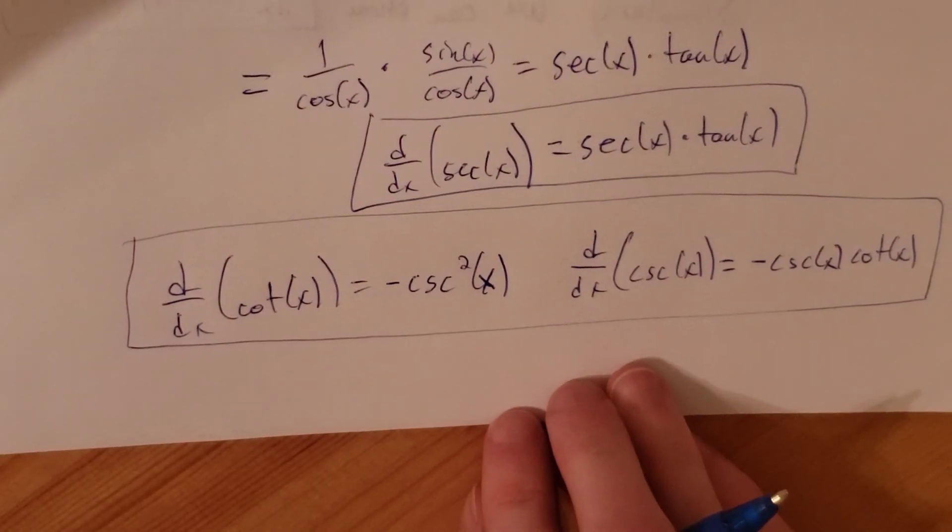The numerator is one by the Pythagorean identity — cosine squared plus sine squared equals one — so this reduces to one over cosine squared. One over cosine is secant, so this is secant squared of x. That's our derivative of tangent.